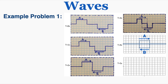At t equals 5, wave A has been shifted one more square to the right and wave B one more square to the left. Drawing the superposition: where wave A has an amplitude of 0 and wave B has an amplitude of negative 2, the total amplitude is negative 2. Where A has positive 2 and B has negative 2, they cancel out to give a total amplitude of 0. Finally, where B has amplitude 0 and A has positive 2, the total amplitude is positive 2. That's what the superposition looks like at t equals 5 seconds.